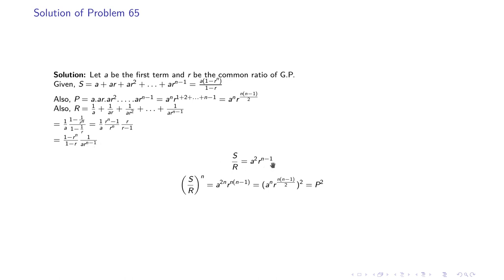Raising S/R to the power n gives (S/R)ⁿ = a²ⁿ · r^(n(n−1)). This is exactly the square of aⁿ · r^(n(n−1)/2), which is P². So (S/R)ⁿ = P², as required.